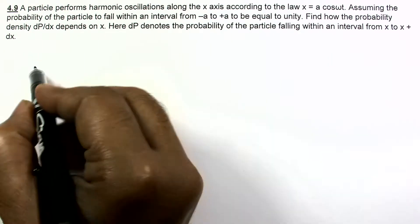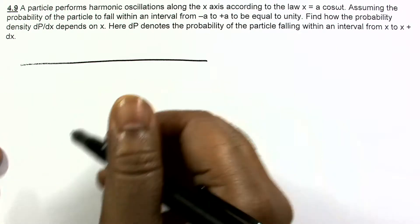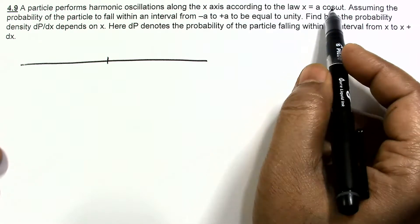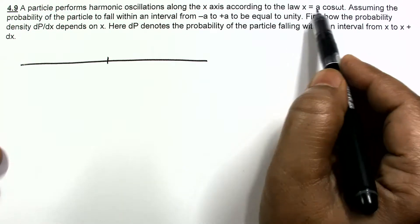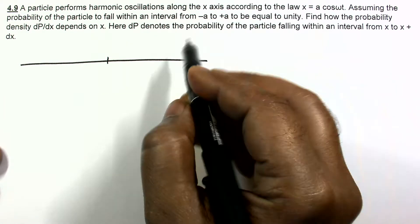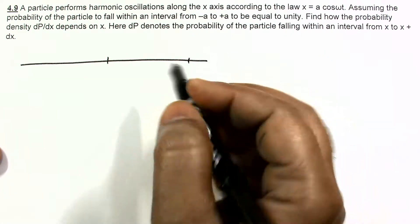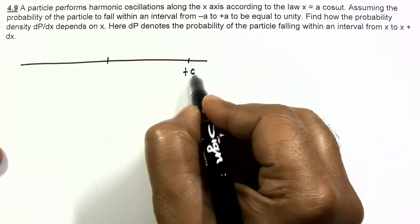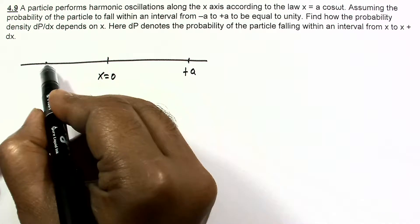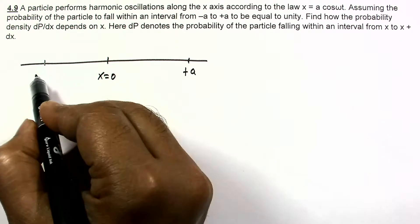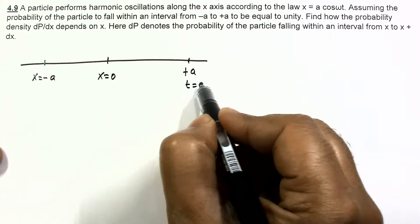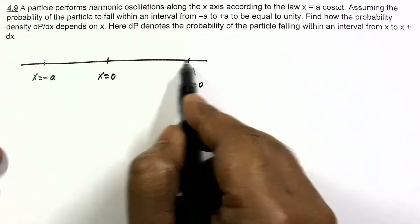The particle is performing simple harmonic motion according to this law. From this equation we can see that at t equals 0, the particle is at the extreme position. The extreme position will be plus a, the mean position will be x equals 0, and the other extreme will be x equals minus a. So at t equals 0 the particle is at plus a and then it will move toward the mean.